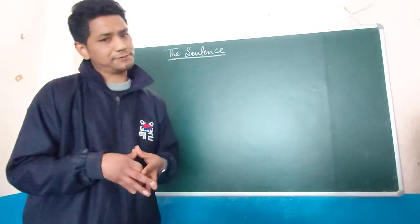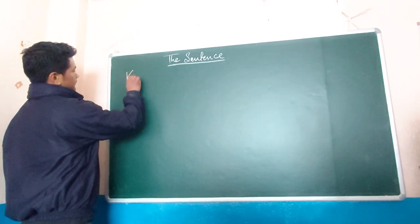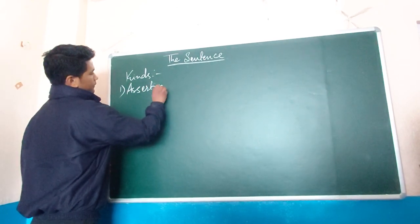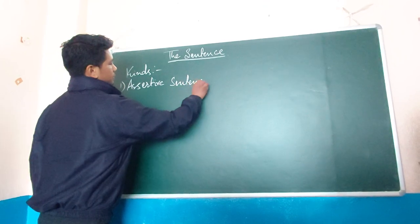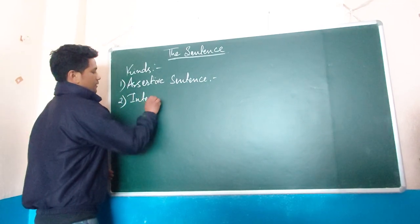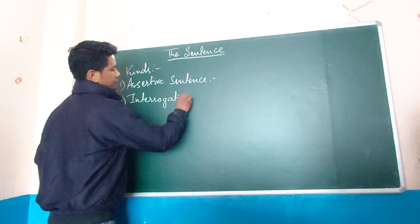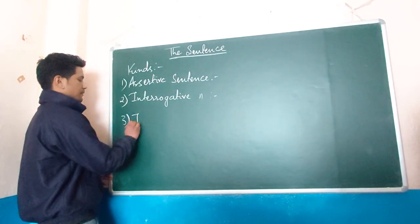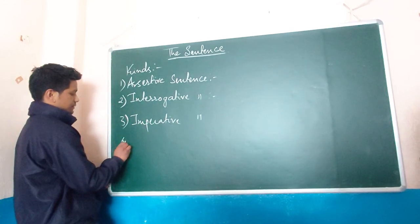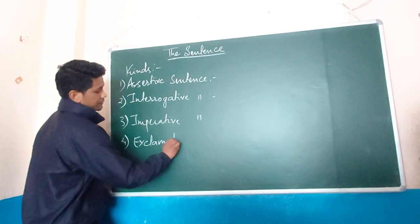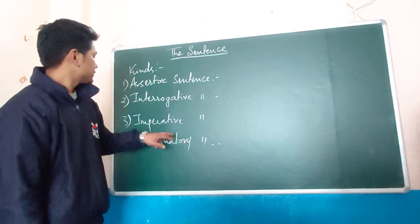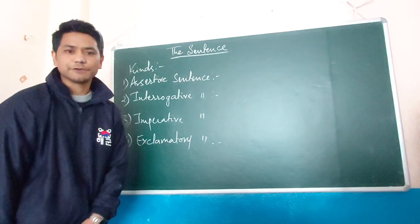Sentences are of four types. Number one is assertive sentence. Next one is interrogative sentence. Number three is imperative sentence. And the last one is exclamatory sentence. So these are the four kinds of sentences: assertive, interrogative, imperative, and exclamatory.